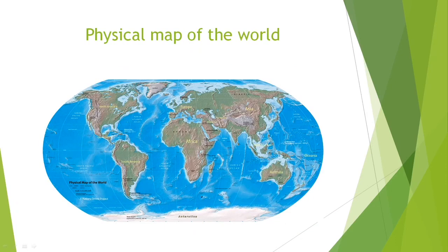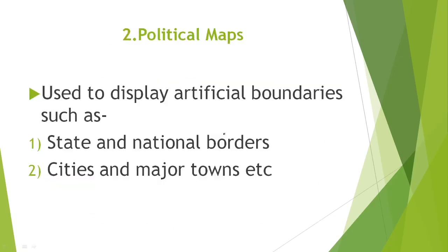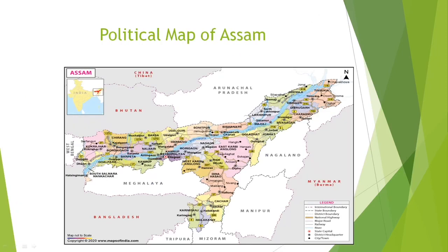On the physical map of the world, blue represents water, green represents plains, and brown represents mountains. The second type of map is the political map, which shows artificial boundaries.